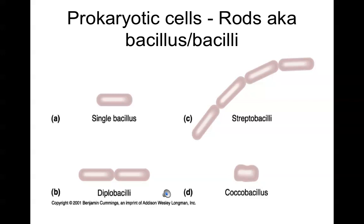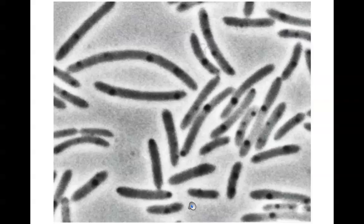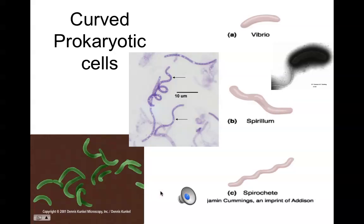A coccobacillus has kind of a football shape or pillow shape. It's not really very long, but it's not truly spherical either. How would you describe these prokaryotic cells? The figure description of the previous photo says those are rod-shaped bacteria, but they're not truly rod-shaped — they're actually slightly curved.